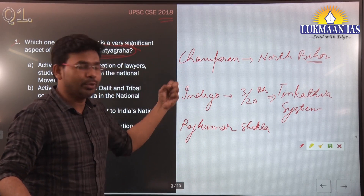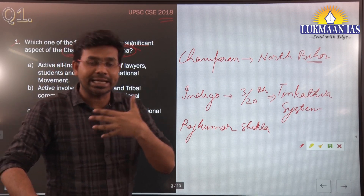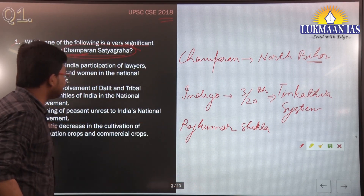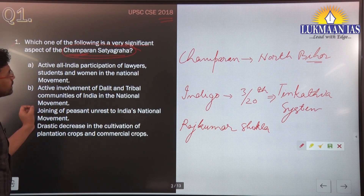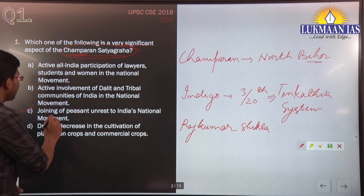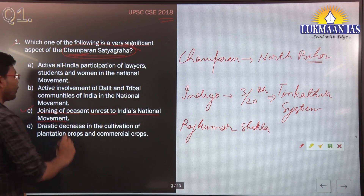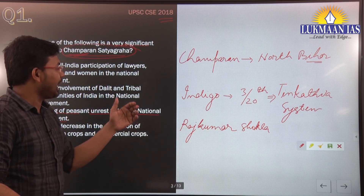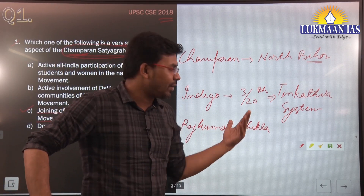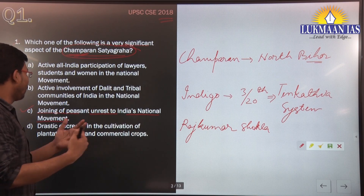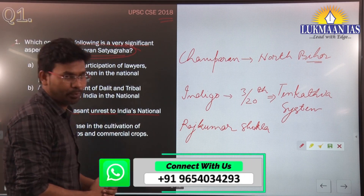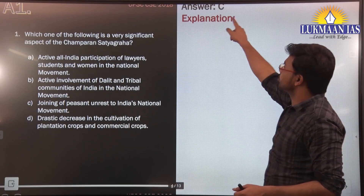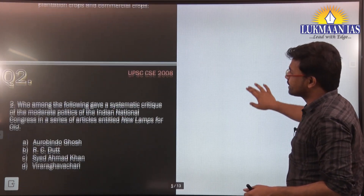The Champaran Satyagraha brought the peasant community into the mainstream nationalist struggle against the British. Since Gandhi was already a national figure, he was able to gain the confidence of farmers and draw them into India's national movement. Therefore, the most significant aspect of the Champaran Satyagraha was the joining of peasants to India's national movement — correct answer is Option C.